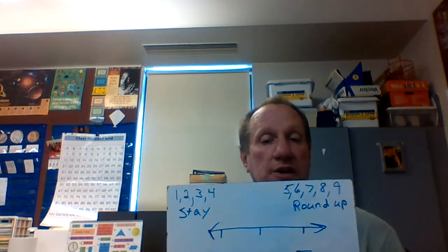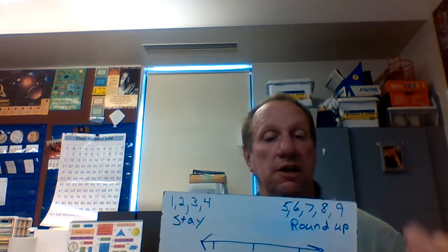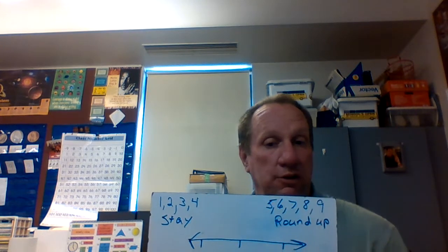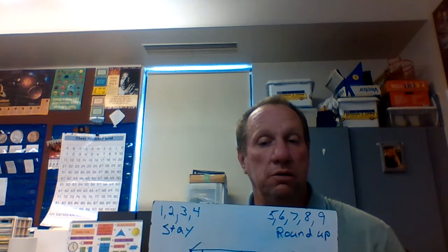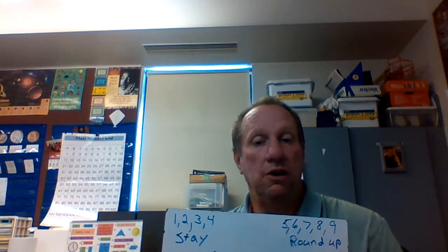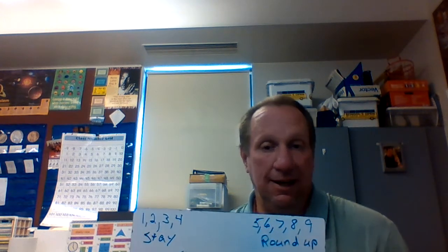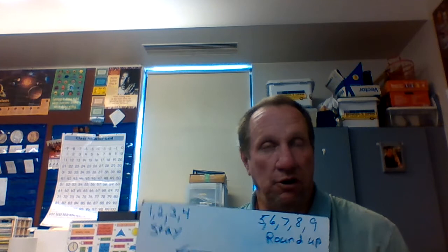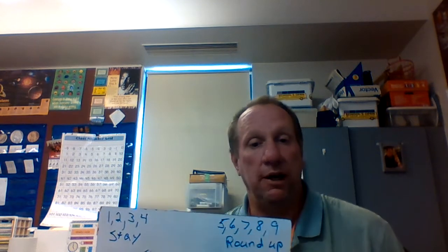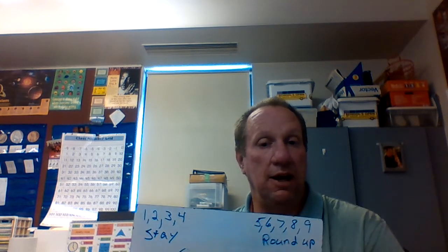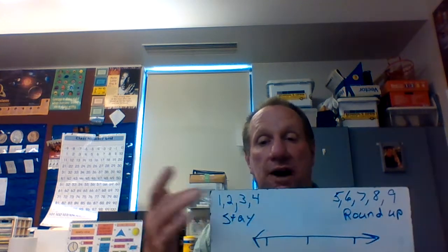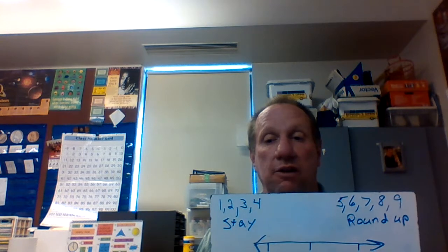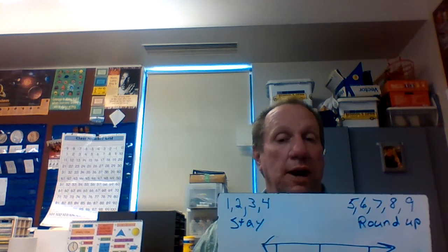I have the numbers, and this is just the ones column when we're rounding to the nearest 10. If it ends in a 1, 2, 3, or 4, we stay at that 10. For instance, if the number is 23, the 3 tells us to stay. Now, if the number ends in 5, 6, 7, 8, or 9, we're going to round up.